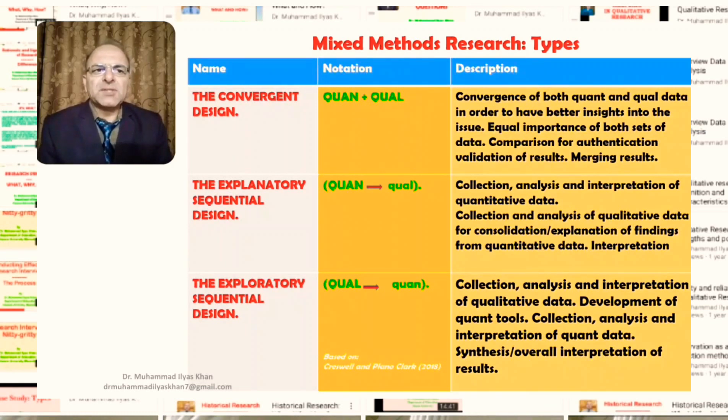Generally, merging results in order to have better insights into the issue that is under consideration is actually the ultimate aim of the convergent design. The explanatory sequential design, which you can see the notation of that, or symbolically, quant leading to qual.